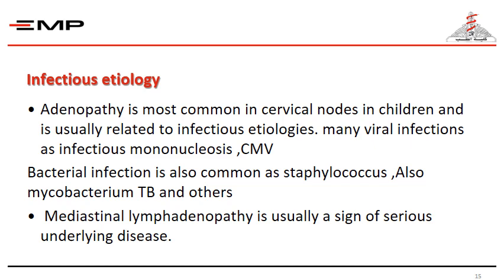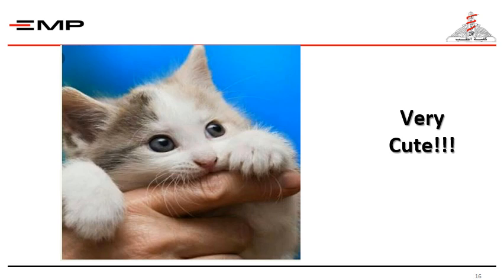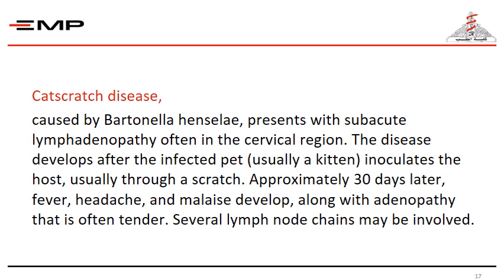Mediastinal lymphadenopathy is usually a sign of serious underlying lung disease. There is also danger of transmitting a disease known as cat scratch disease, caused by the Bartonella organism, which presents with subacute lymphadenopathy, often in the cervical region. The disease develops after an infected pet, usually a kitten, inoculates the host through a scratch. Approximately 30 days later, fever, headache, and malaise develop, along with adenopathy that is often tender. Several lymph node chains may be involved.